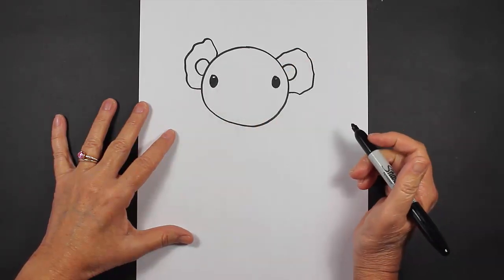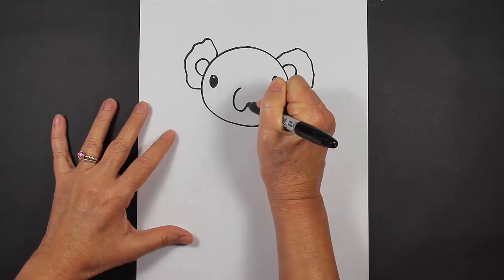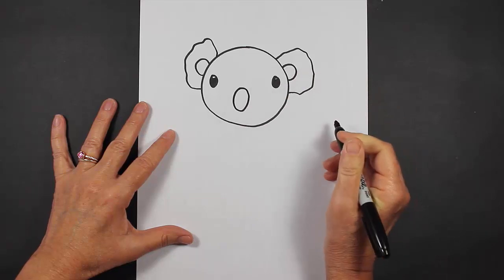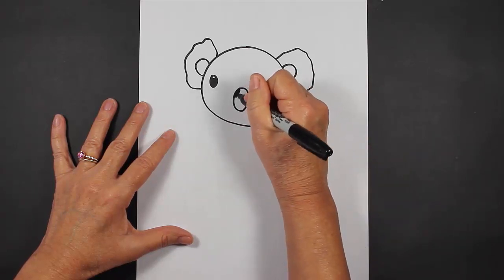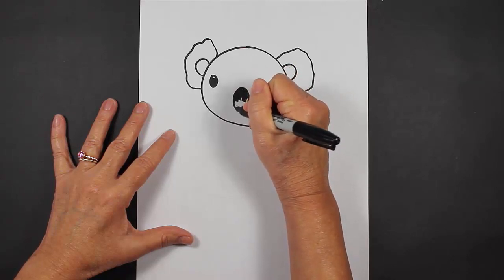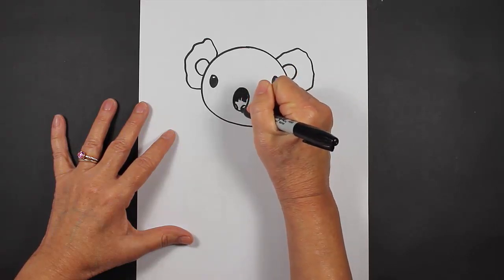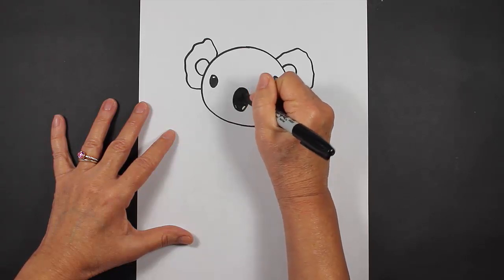Now I'm going to work on my koala bear's nose. So I'm going to make a nice oval right here and I'm going to fill that in except for two little areas on the bottom that I'm going to put his nostrils, just very very small like that. Might even be a little bit hard for you to see.